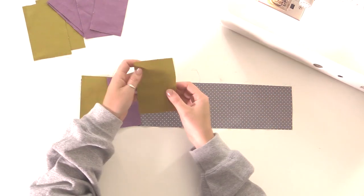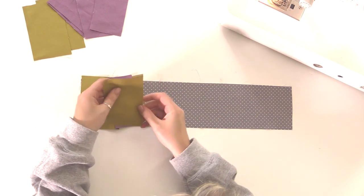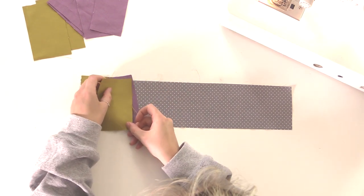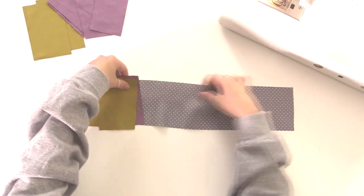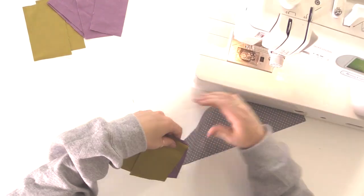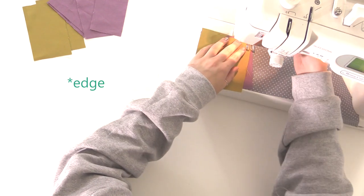Then you want to take your next strip. I've alternated colors of mine, but you can do yours as you please. I'm just following the same process, so right sides together, placing on top of the top strip at an angle, and then sewing down the line.